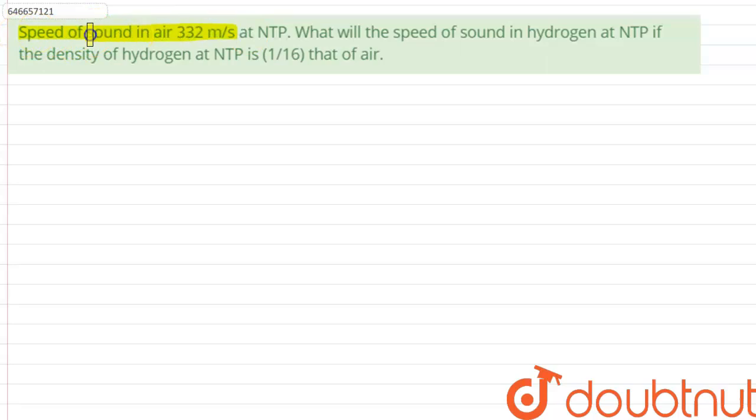air is 332 meters per second. What will be the speed of sound in hydrogen at NTP if the density of hydrogen at NTP is 1/16 that of air?